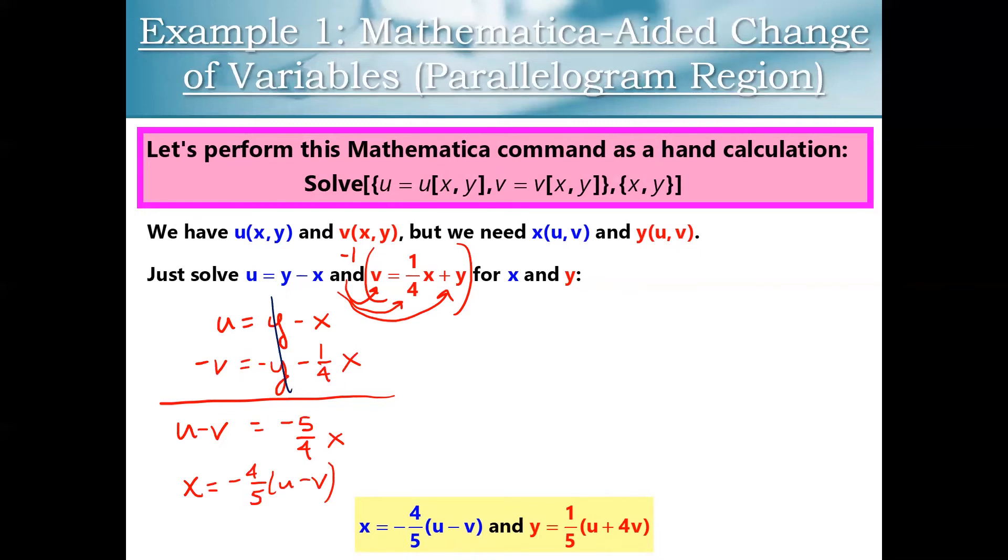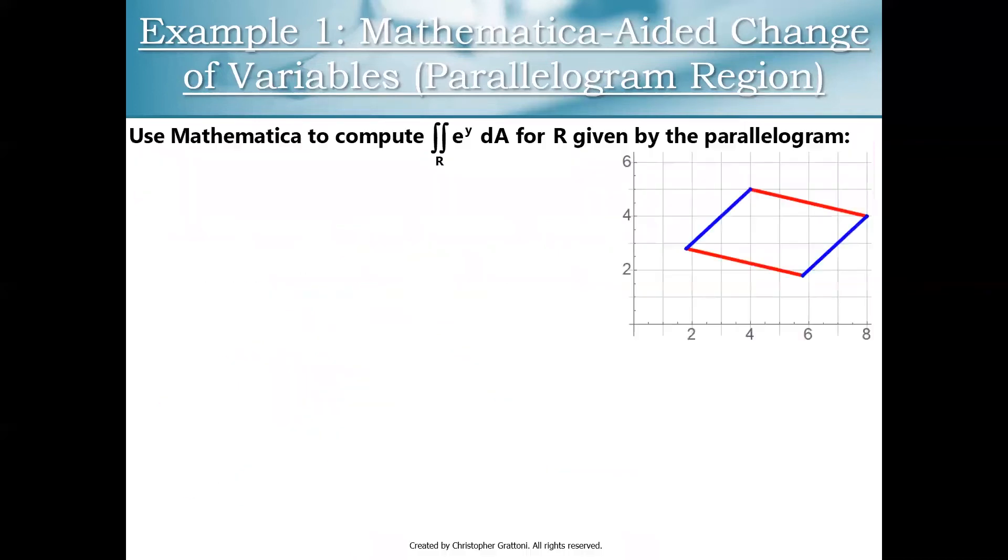Now you could do the same process again. But instead of eliminating y's like I did right here, pick something else to multiply and try to eliminate x's. I'm going to leave that for you. So go ahead and pause the video and you can give that a try and see if you can get y is equal to one fifth u plus four v. But it's just a simple elimination problem that you would have seen in an algebra one class.